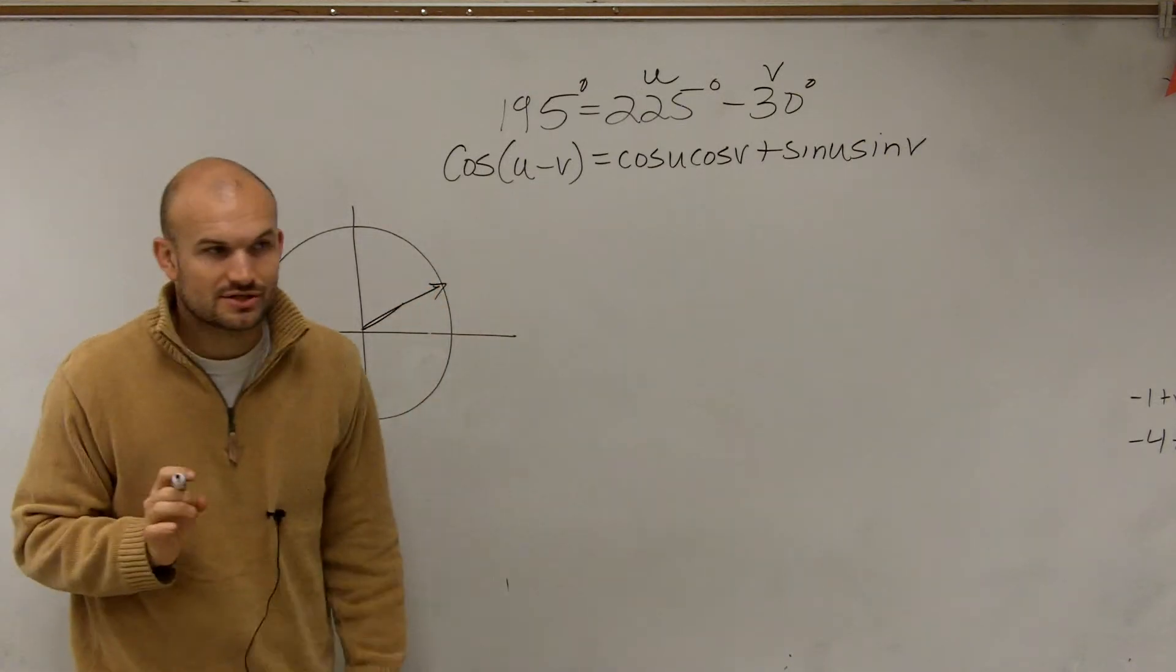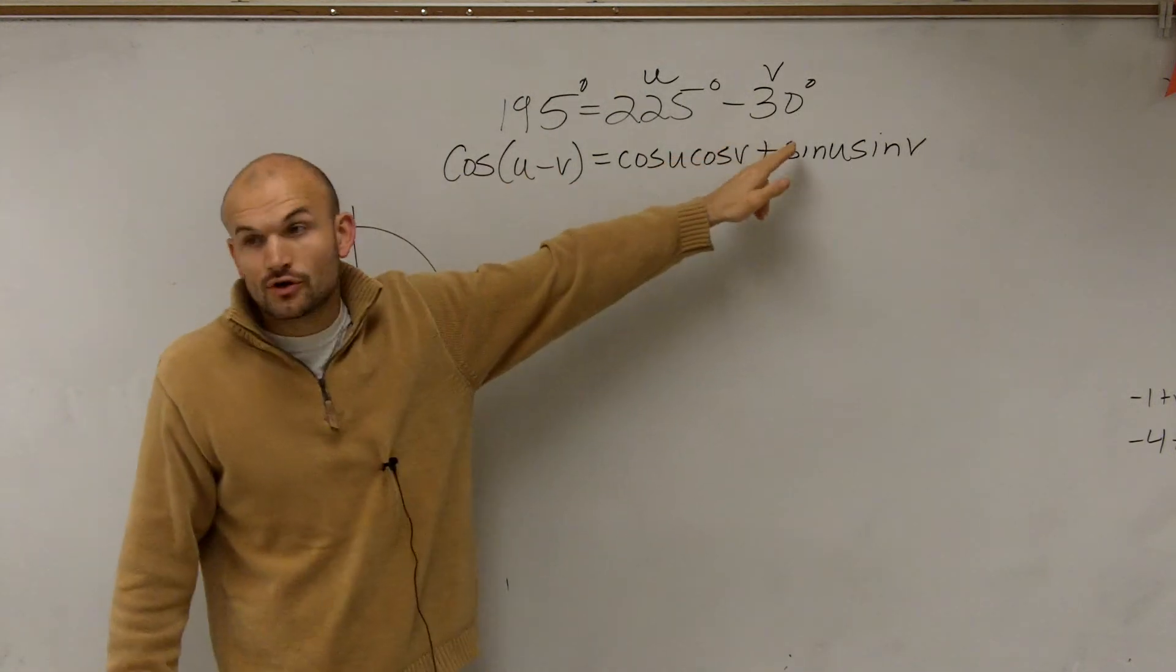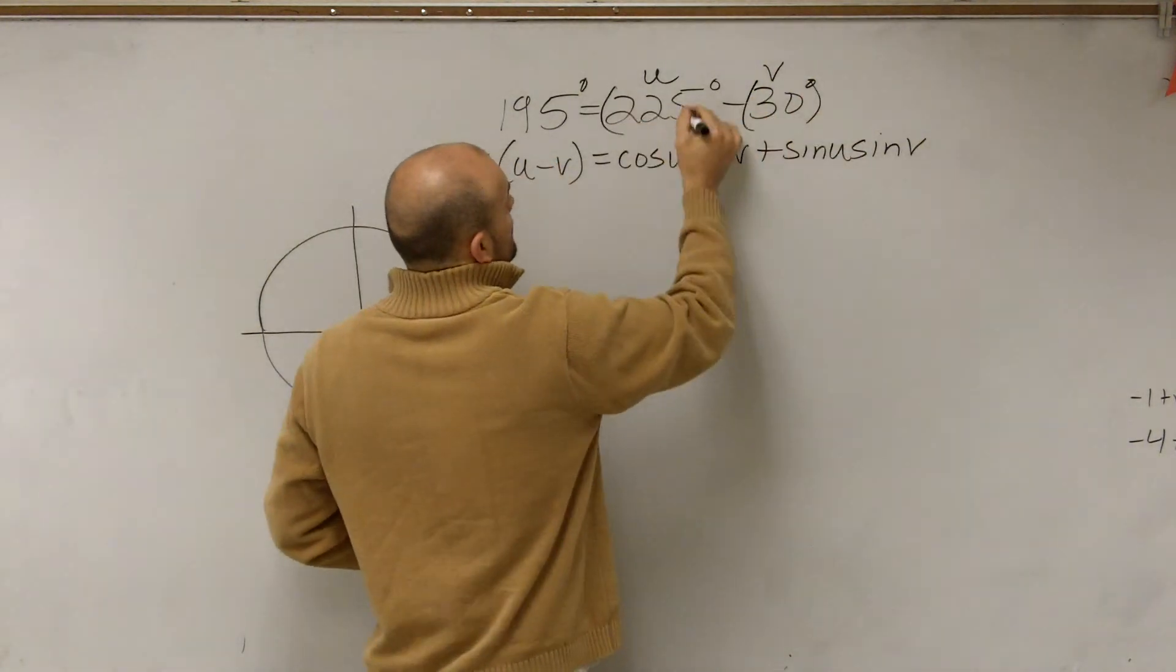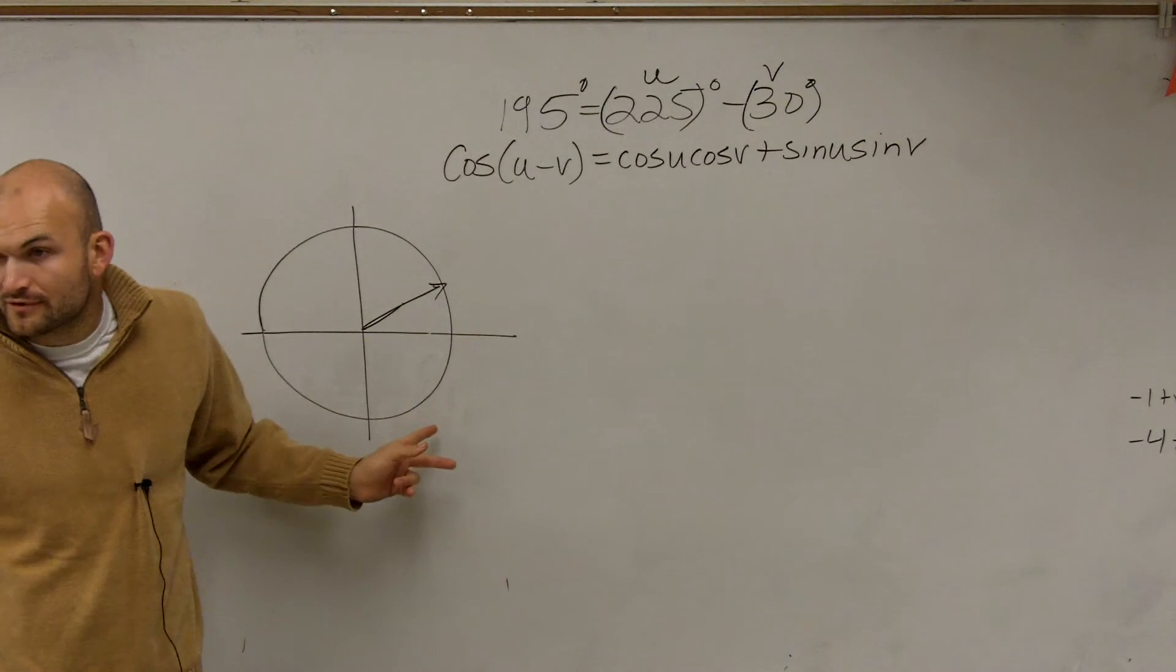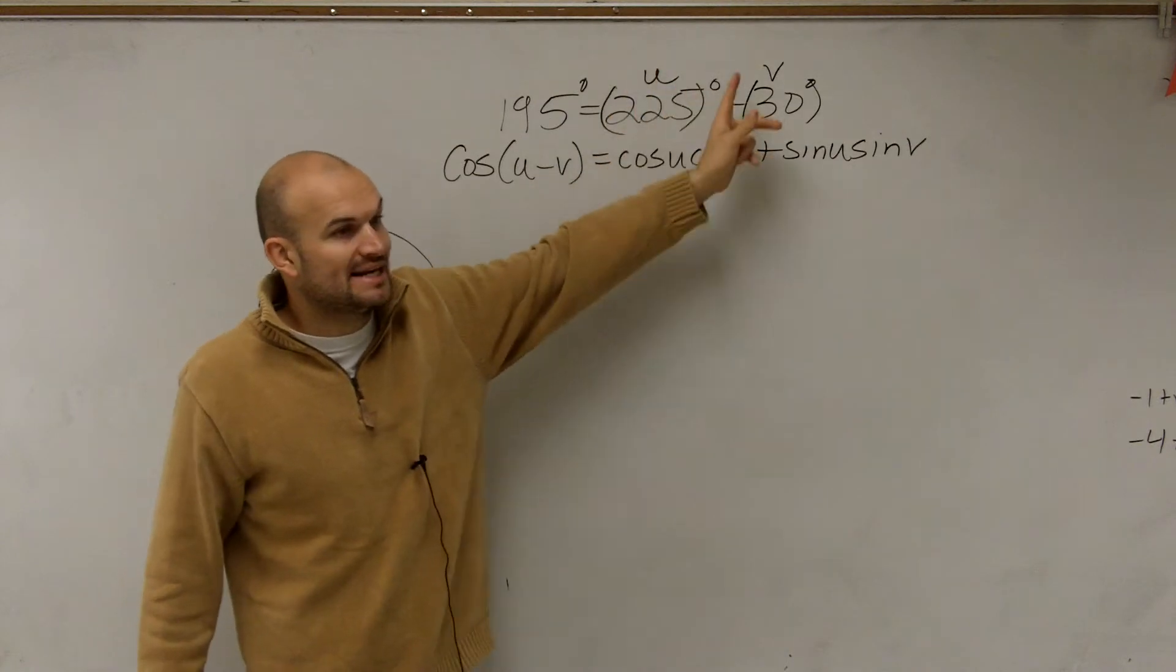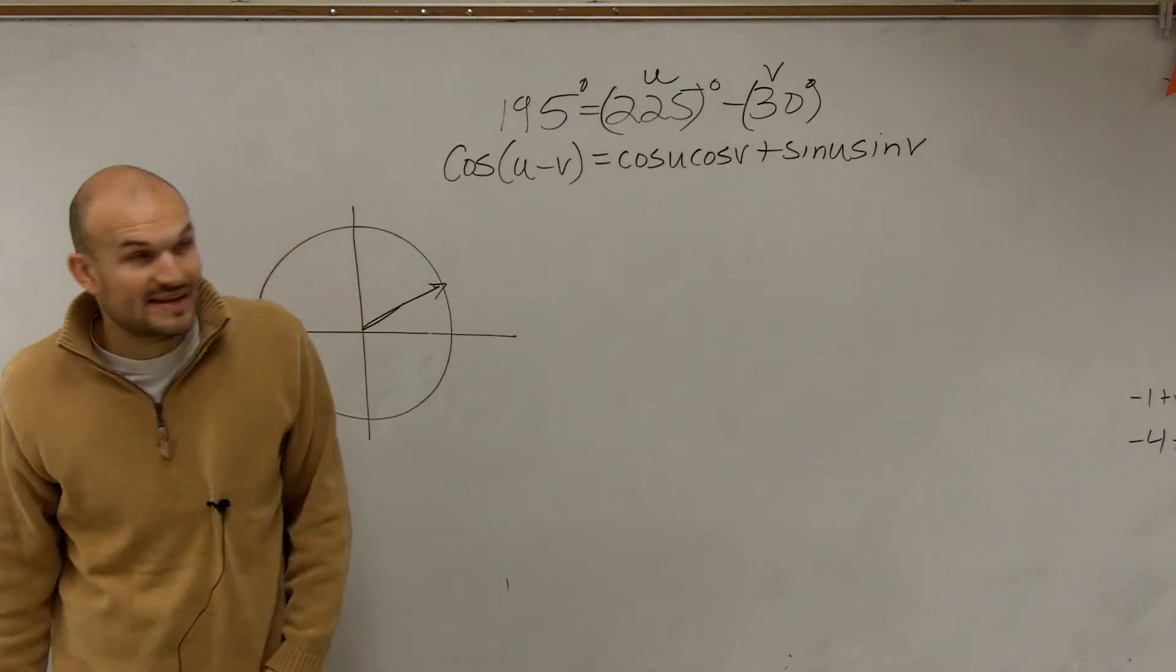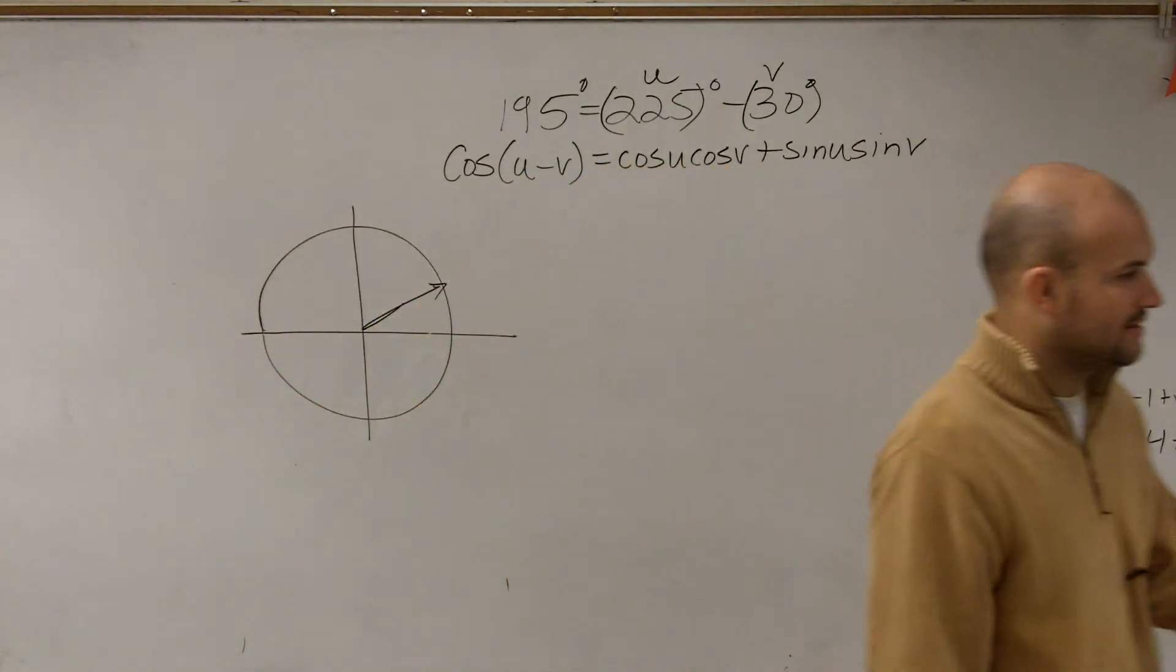Now, the main important thing I want you guys to understand about this is it says u minus v. Therefore, this is 30 degrees. Put them in parentheses. So it's not negative 30 degrees. We're not trying to find, we're not going to evaluate for negative 30. We're evaluating for 30 degrees because it's u minus v. That means u is 225 and v is 30. Do you guys understand the difference? It's u minus your v.